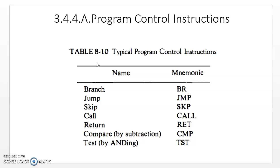This sequence can be altered with the help of certain special types of instructions called program control instructions, such as branch, jump, skip, call, and return. Compare and test are not exactly program control instructions, but they have a relationship with these program control instructions, which is why these two are also listed in this table. We will talk about these two instructions as well. Let us start with branch instructions.